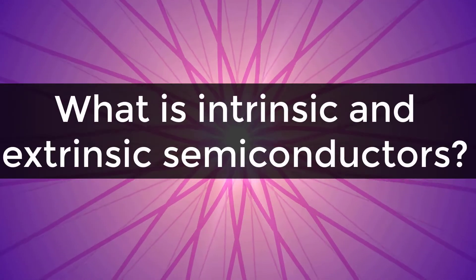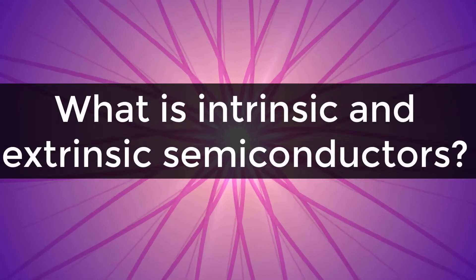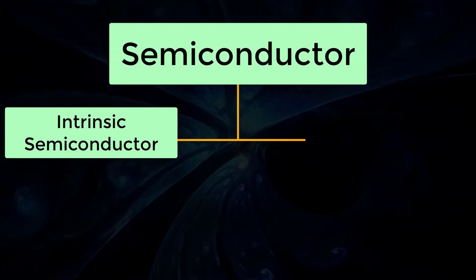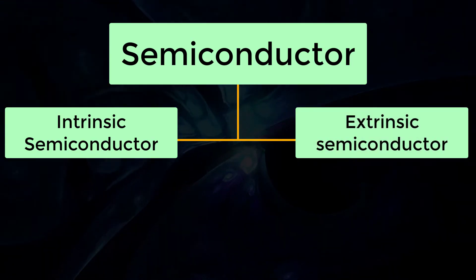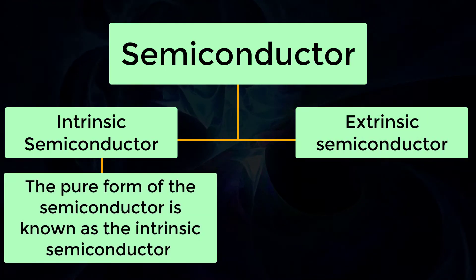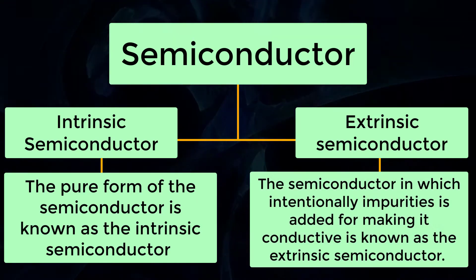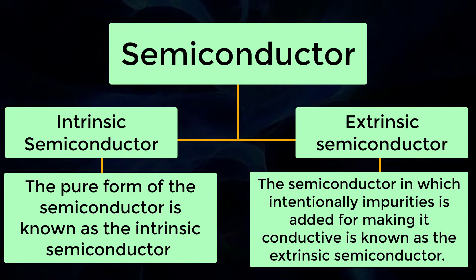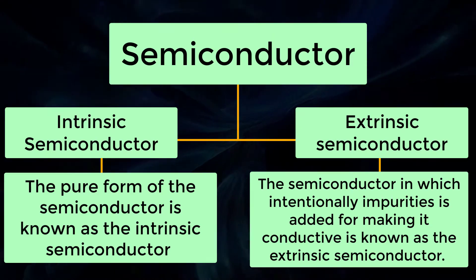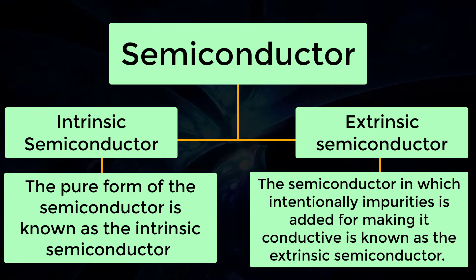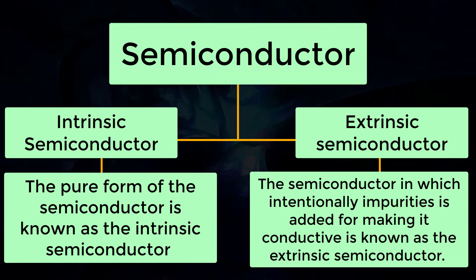Intrinsic and Extrinsic Semiconductors. The semiconductor is divided into two types: intrinsic semiconductor and extrinsic semiconductor. The pure form of the semiconductor is known as the intrinsic semiconductor, and the semiconductor in which impurities are intentionally added to make it conductive is known as the extrinsic semiconductor.